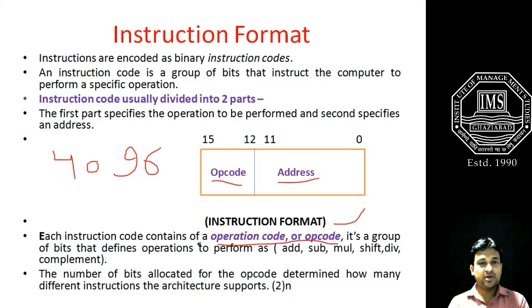Each instruction code contains an operation code, which we have discussed earlier. It is a group of bits that define operations to perform. A number of operations can be performed by this opcode field, such as addition, shift, multiplication, etc. To know how many operations this particular opcode will support, we simply use the formula 2 raised to the power n.